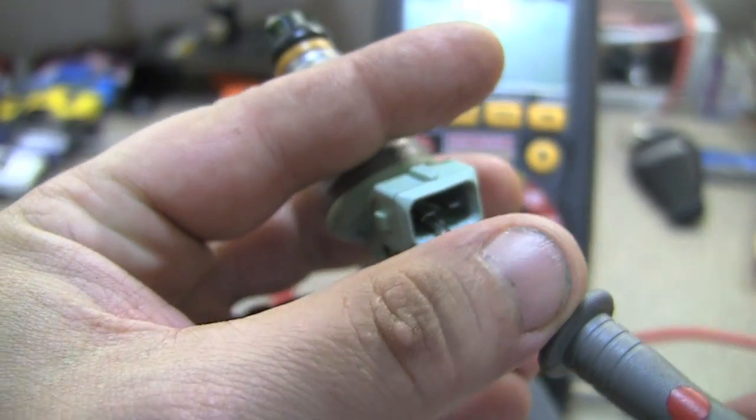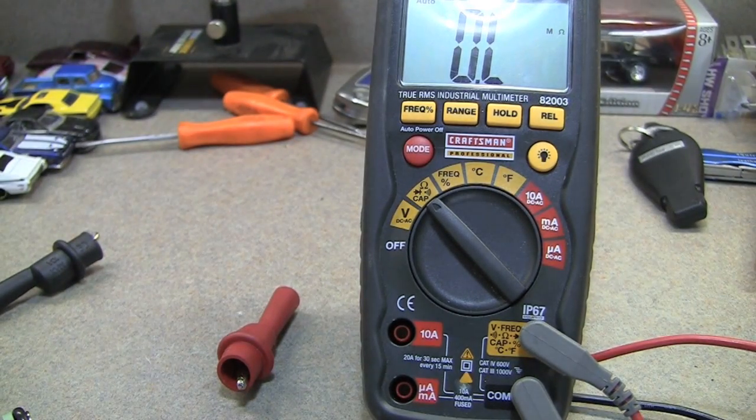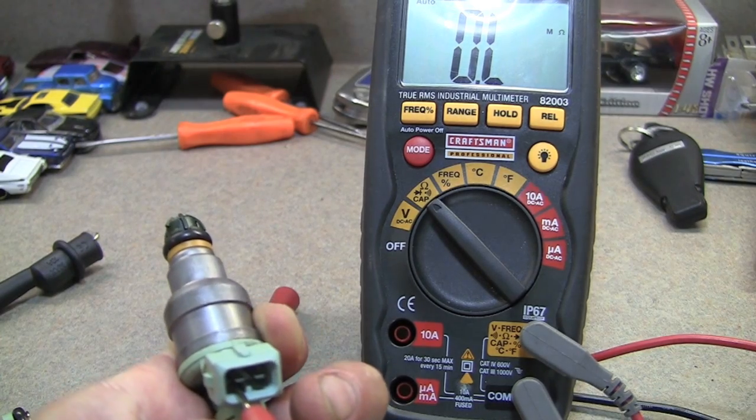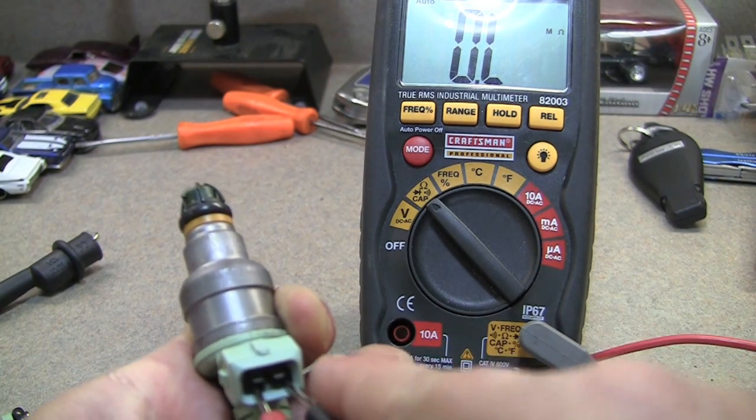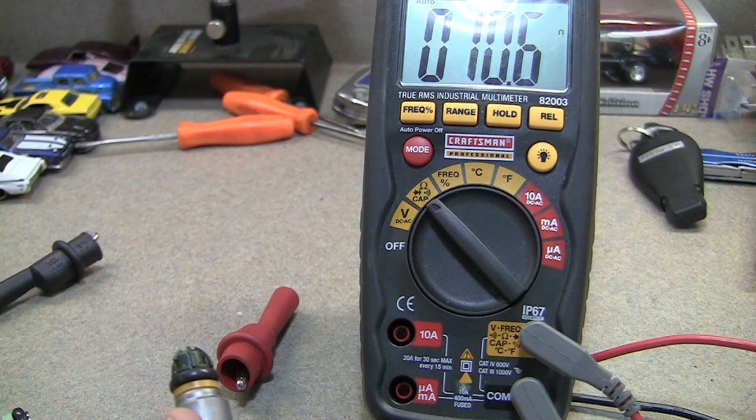So one side on the positive - hopefully we don't drop it like we just did. Not the injector, but the probe. Just stick one in there on the positive and the other one on the negative, and you'll get your reading.